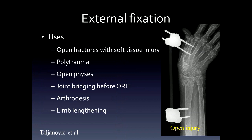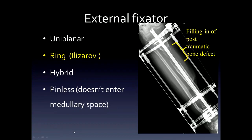External fixators are attached to bone via pins, and then they're connected to a frame, which allows the position to be maintained. External fixators are used in patients who have open fractures with soft tissue injuries, patients who have multiple injuries, and for limb lengthening. In this second patient, you can see the effects of limb lengthening with bone growing in to fill this gap, and the use of this complex frame called an Ilizarov frame.